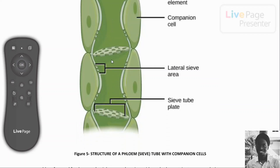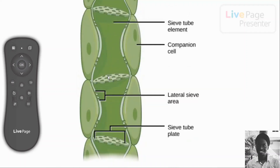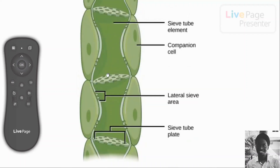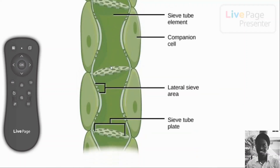The process of translocation requires energy to continuously transport materials from sources to sinks. Because of this, the companion cell must have many mitochondria to produce energy in the form of ATP to facilitate that transport, since the sieve tube elements cannot do that by themselves.